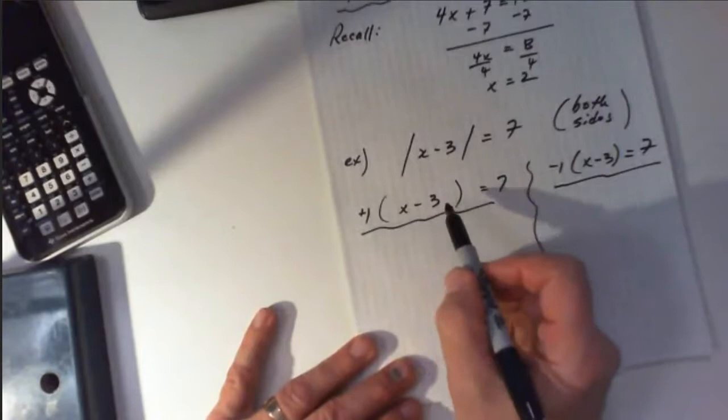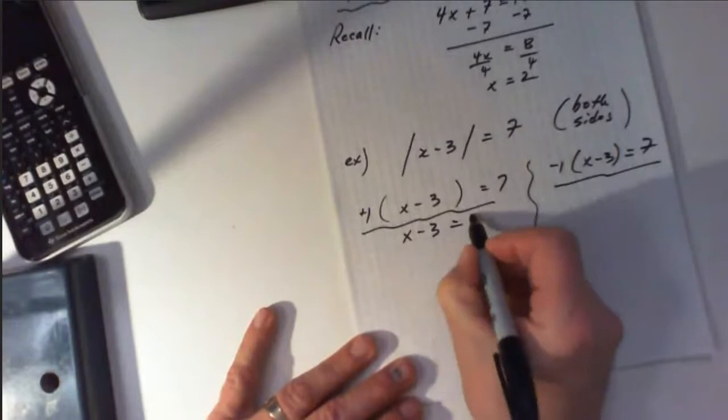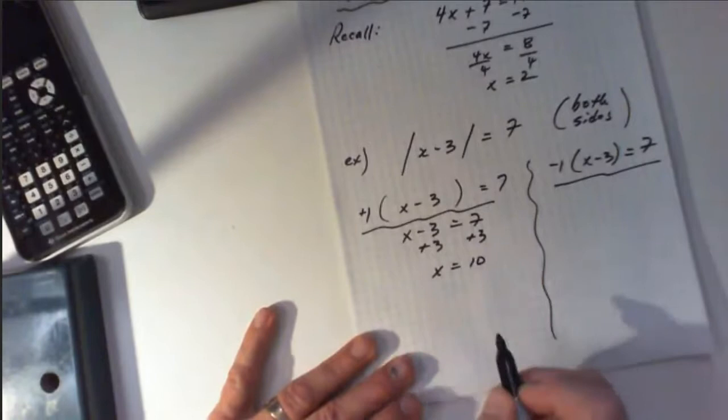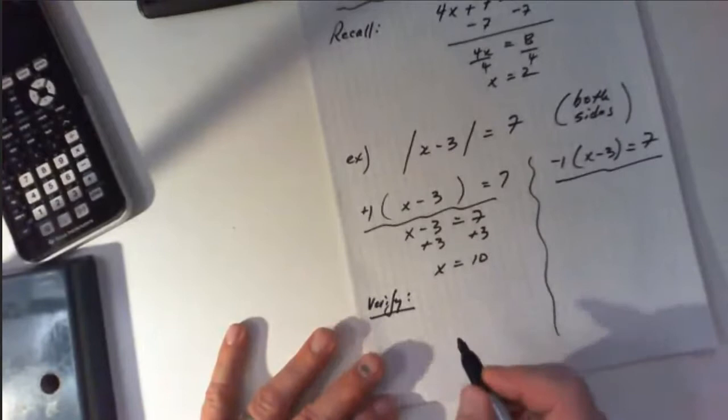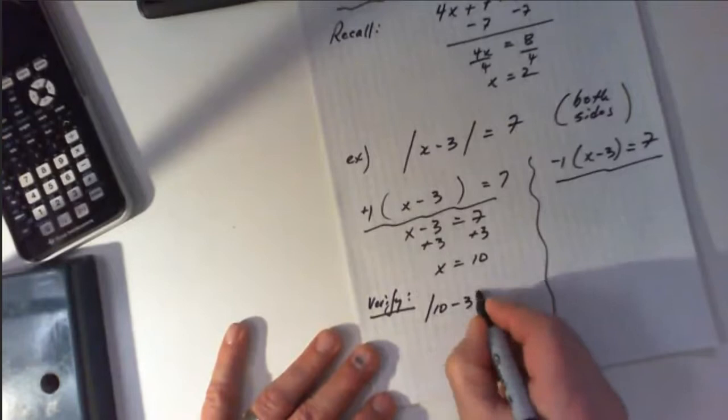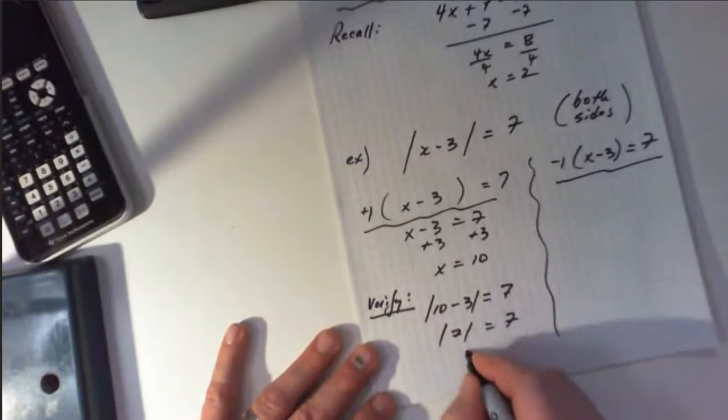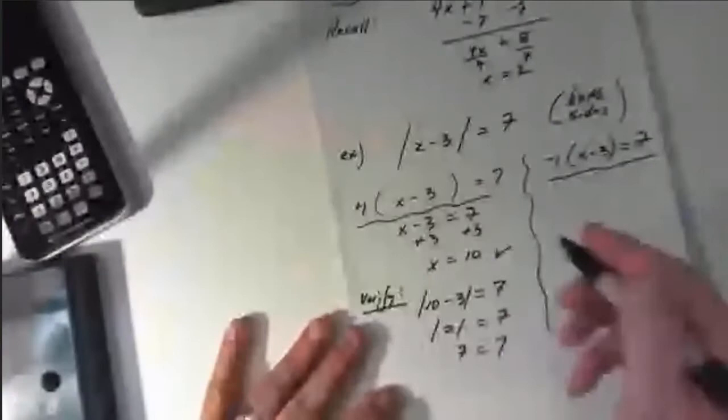Distributing into the brackets, when you multiply by positive 1, nothing changes. So you will add 3 to get an answer of x equals 10. We must, as always, verify our answers. Replacing this 10 back in the original equation, you get the absolute value of 7, which is equal to 7. So this answer checks out.